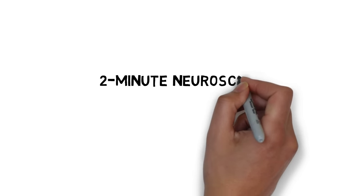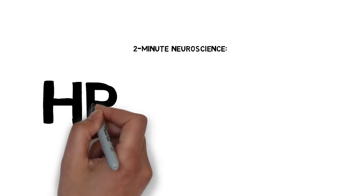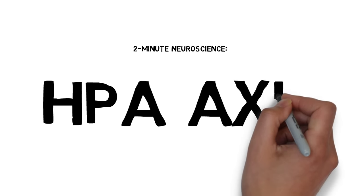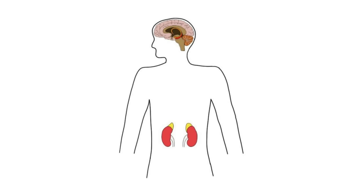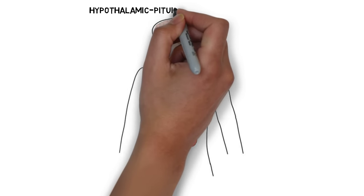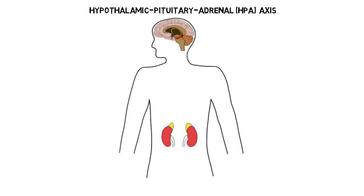Welcome to 2-Minute Neuroscience, where I explain neuroscience topics in 2 minutes or less. In this installment, I will discuss the HPA axis. The hypothalamic pituitary adrenal, or HPA, axis is best known for its role in our body's reaction to stress.